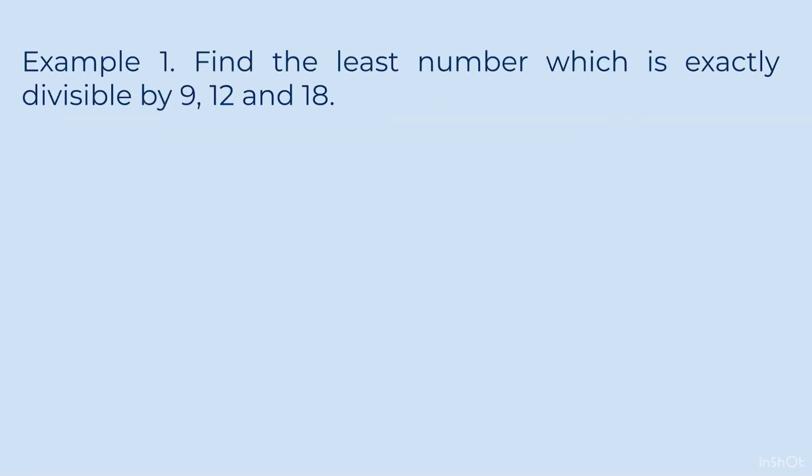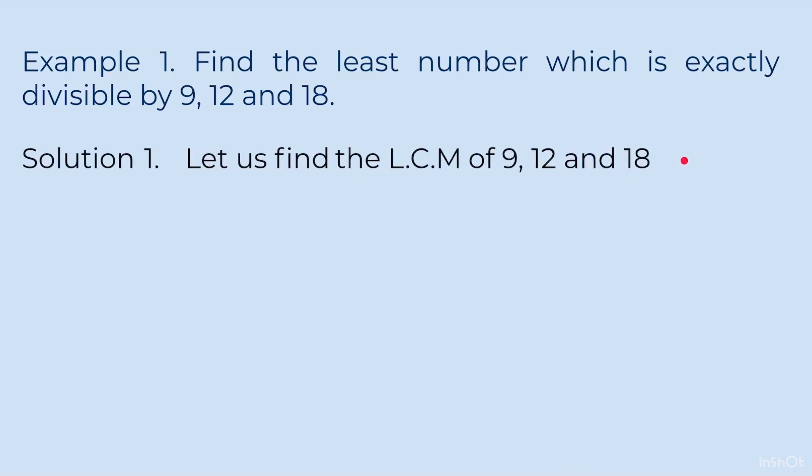Example 1. Find the least number which is exactly divisible by 9, 12 and 18. Here you will have to concentrate on the word 'least'. Wherever the word least is used, you have to find out the LCM — Least Common Multiple. Let us find the LCM of 9, 12 and 18.